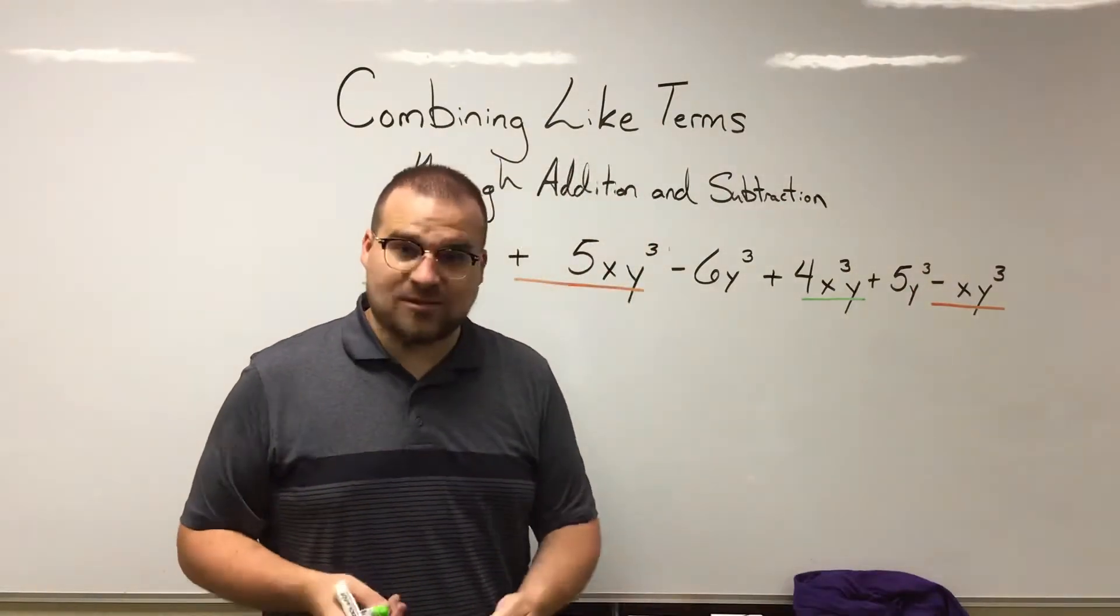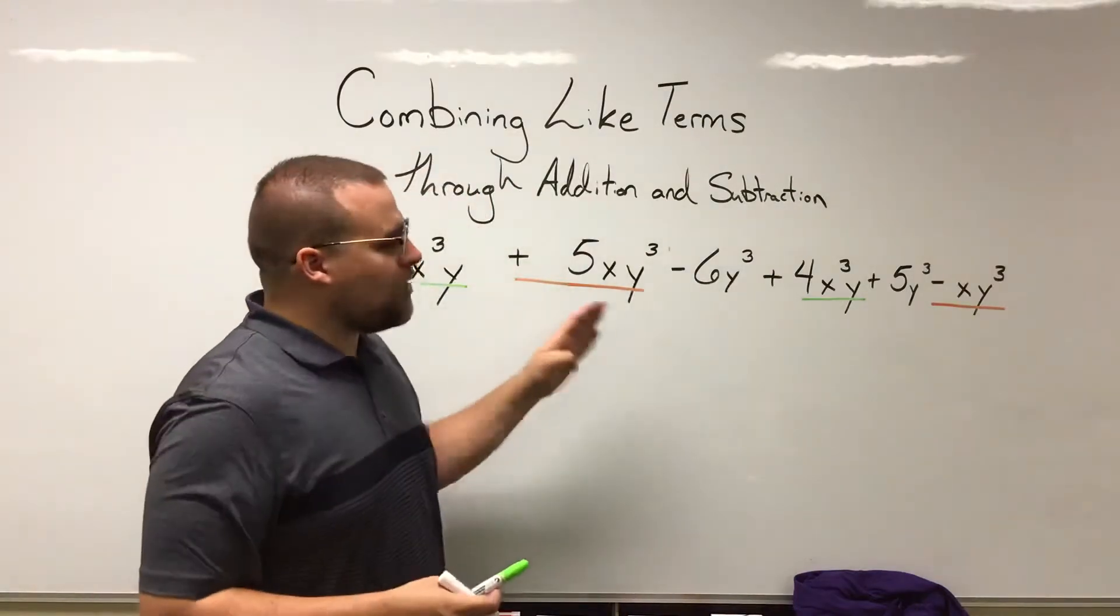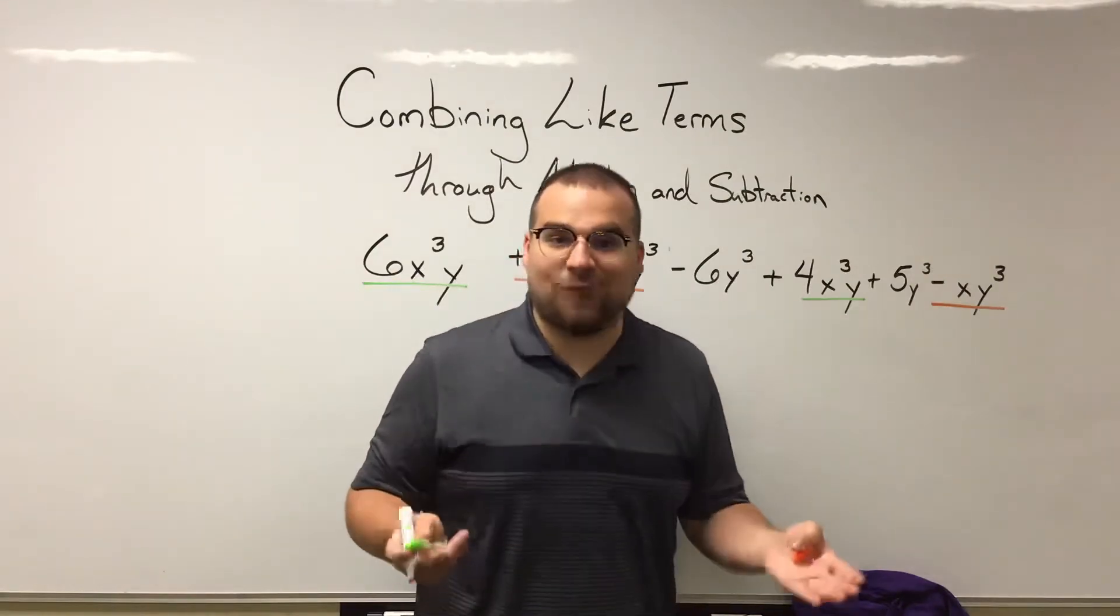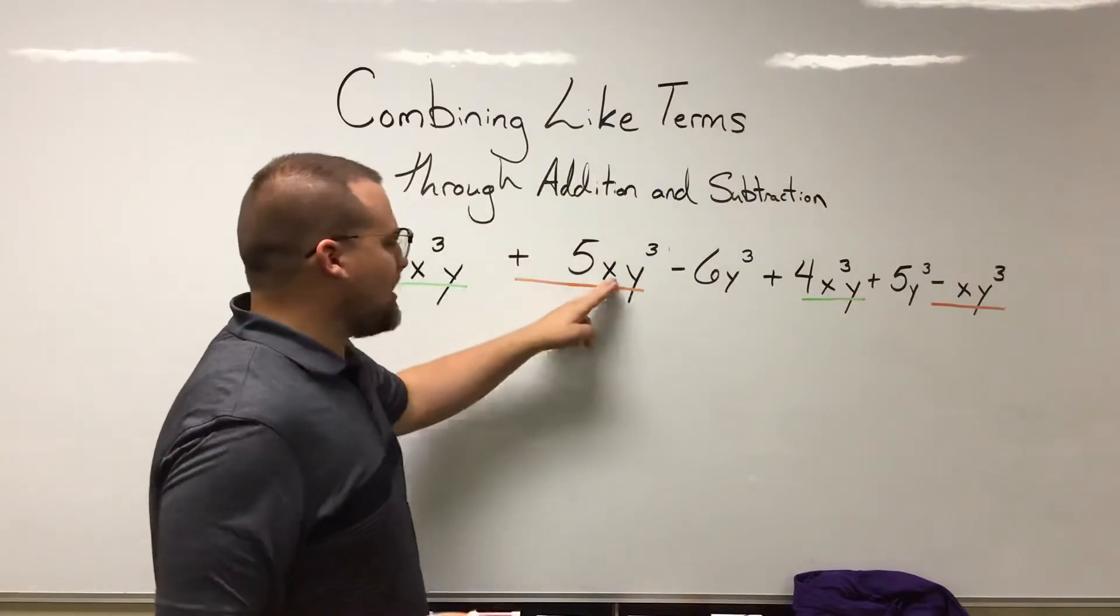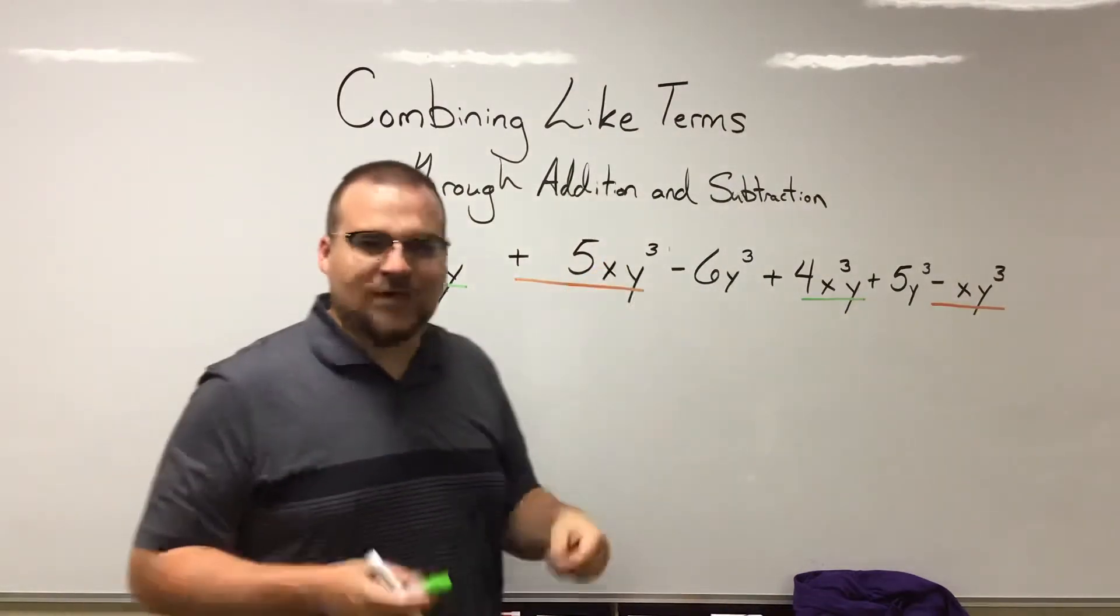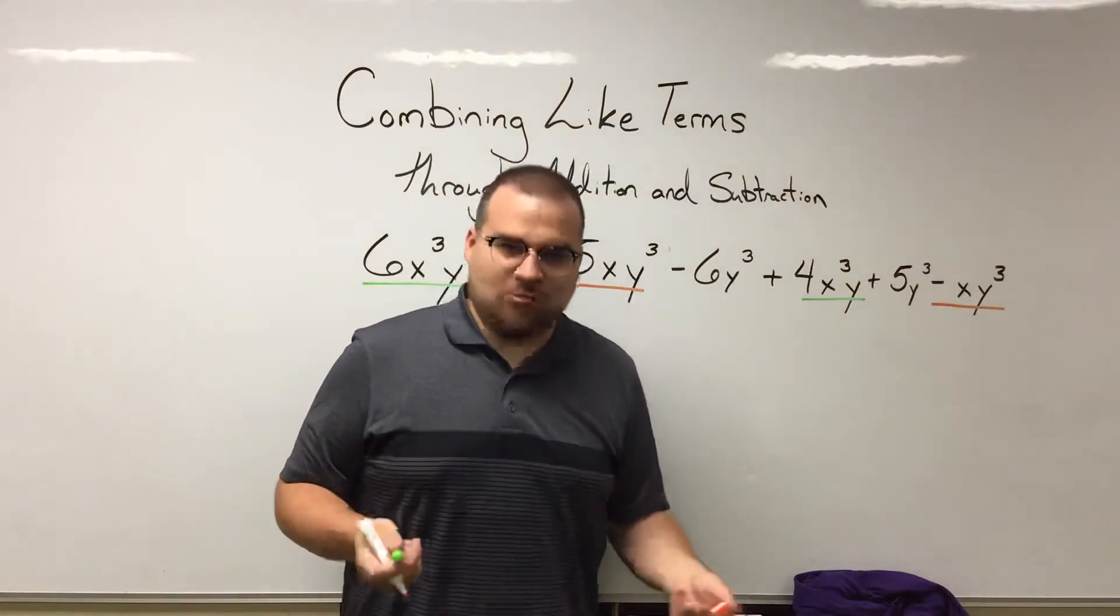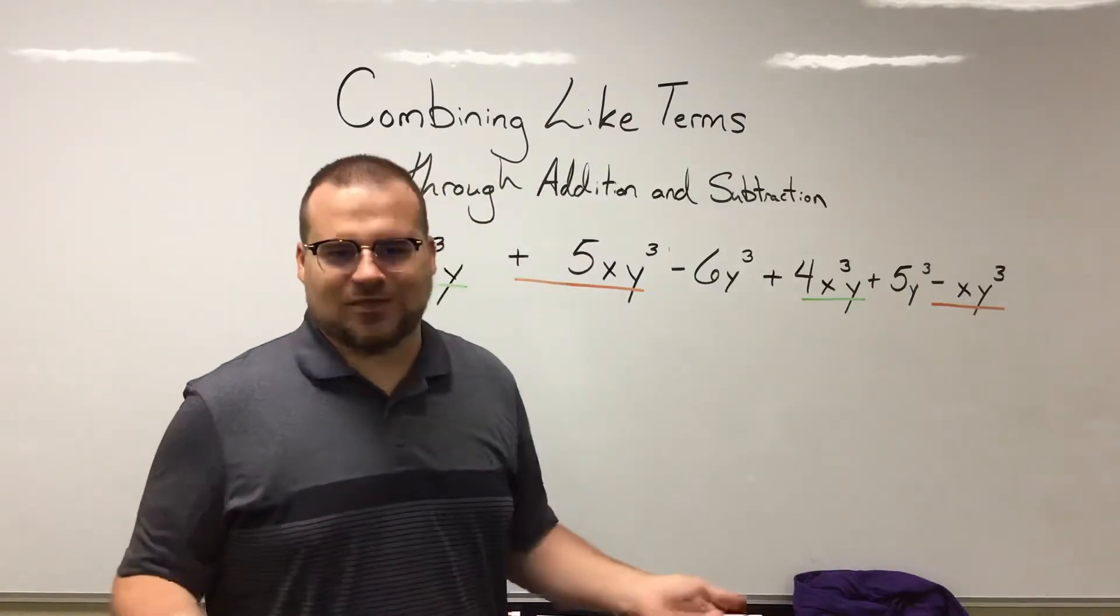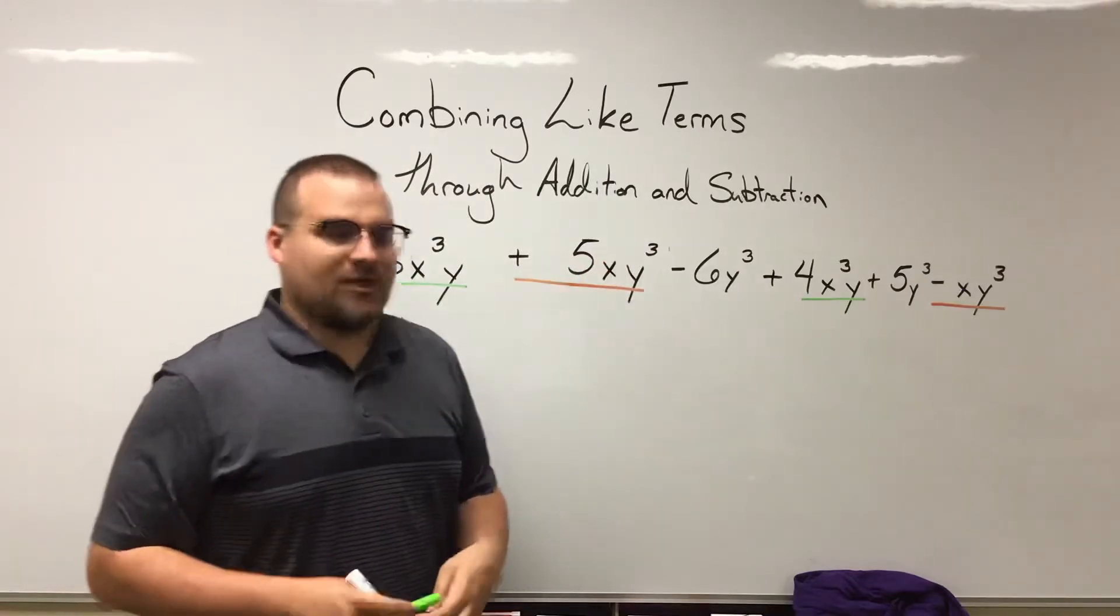It does—we don't see it, but it does. What coefficient is written in front of any variable that just doesn't have one written there? Yeah, it's a 1. It's kind of like how this X—we don't see any exponent written above the X, but does that mean it's to the zero power? No, because an exponent of zero means that variable doesn't exist. It's to the first power.